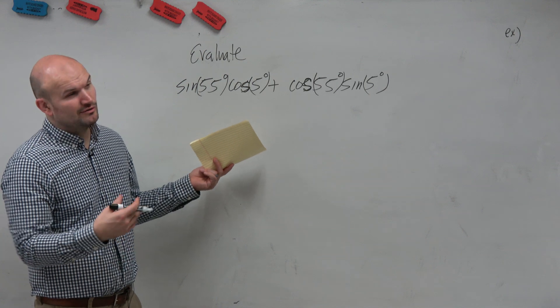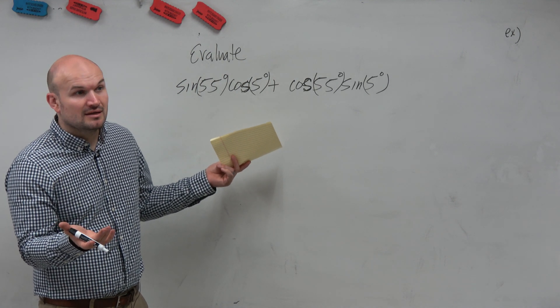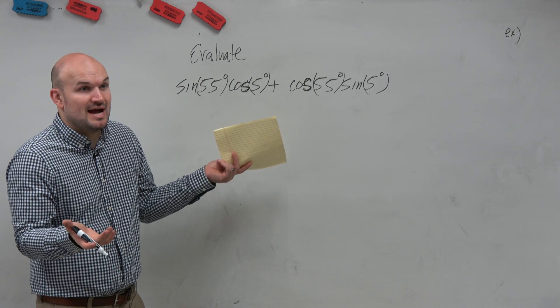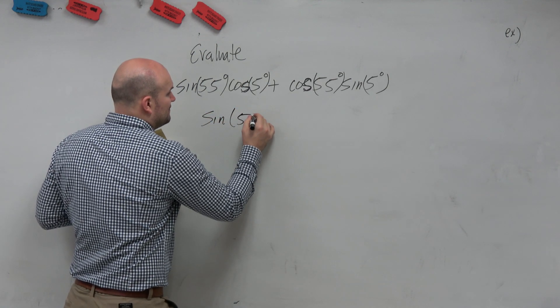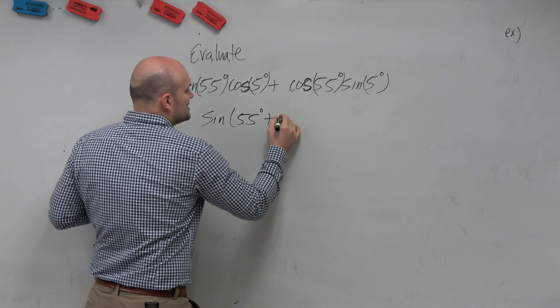Tangent? We can rule out tangent pretty quick, right? It's a sine formula. Is it the add or the subtract? Add. Adding. So basically, this is just saying, what is the sine of 55 plus 5 degrees?